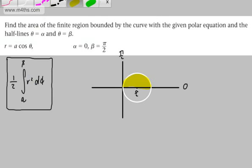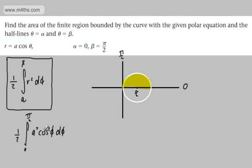So let's write this then. What we want then is one half, and we're going to write this as one half the integral from zero to pi by two. They're the values that I've been given of r squared. Well, r squared is going to be a squared cos squared theta, and then we're integrating with respect to theta.